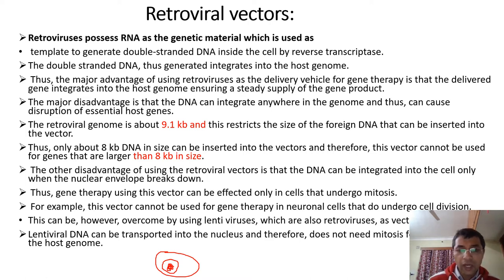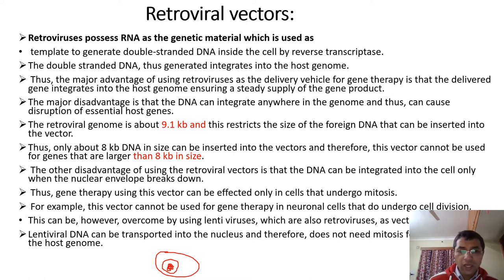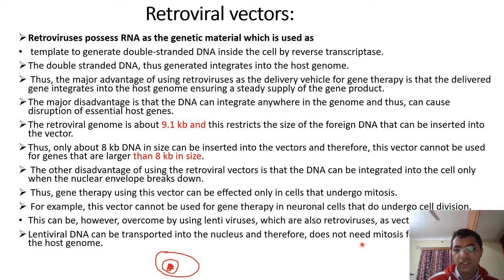To overcome this limitation for non-dividing cells like neurons, we use lentiviruses, which are also a type of retrovirus. Lentiviruses transport their DNA directly into the nucleus and do not need any mitotic activity for integration into the host genome. So lentiviruses overcome the requirement for mitosis.